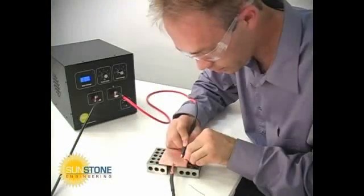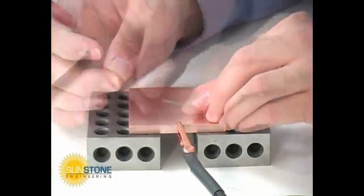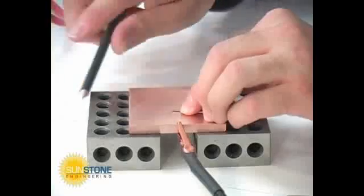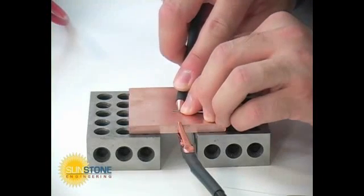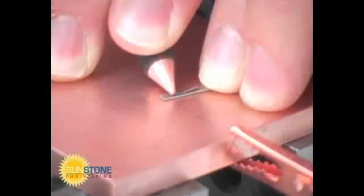Sunstone single-pulse resistance welders provide flexibility for research or light production. Sunstone single-pulse welders can be adjusted to a minimum energy of 0.015 joules.